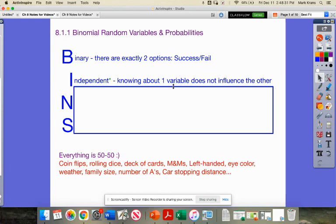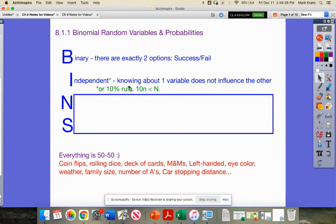Second is independent, where if we know about one variable, it does not influence the other. And there's an exception to this rule. It's called a 10% rule. And as long as my sample is less than 10% of my population, the probabilities don't change by much is what the argument is.